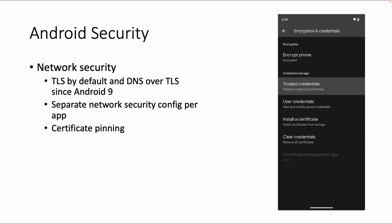The next topic of Android security is network security. By default Android uses TLS and DNS over TLS since Android 9, and you can have a separate network security configuration per app. Another measure is certificate pinning, which ensures that apps handling sensitive data — like banking apps — only trust communication with APIs using a trusted certificate installed on the device. We will have some examples in the lab. Certificate pinning also prevents decryption of network traffic, though there are tricks to bypass it.